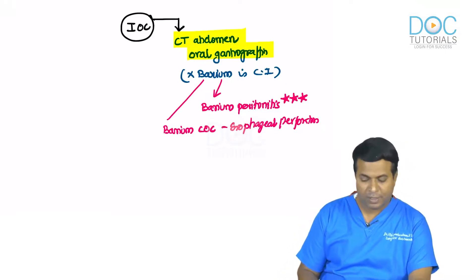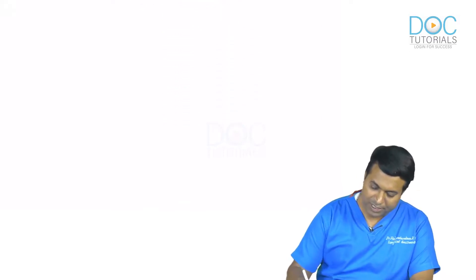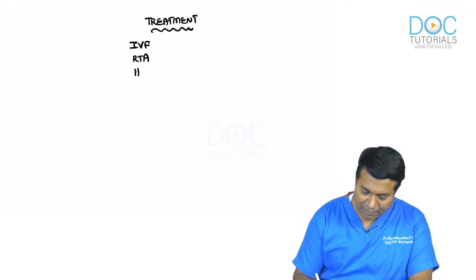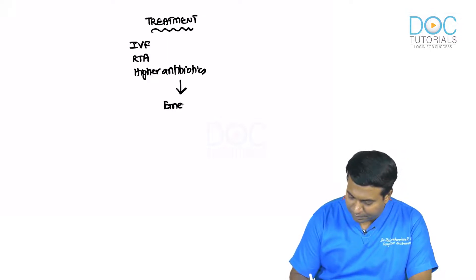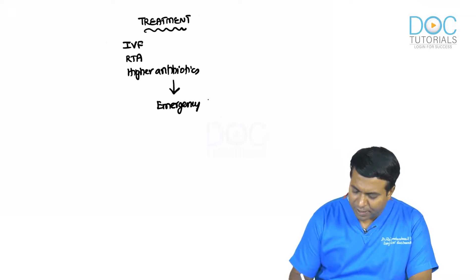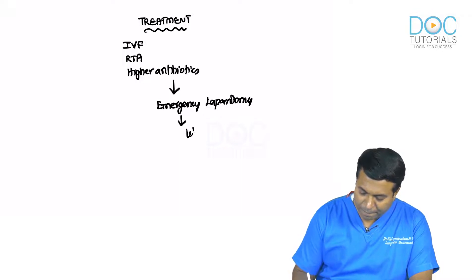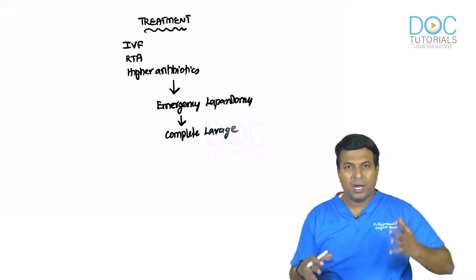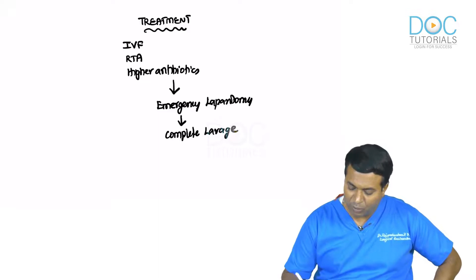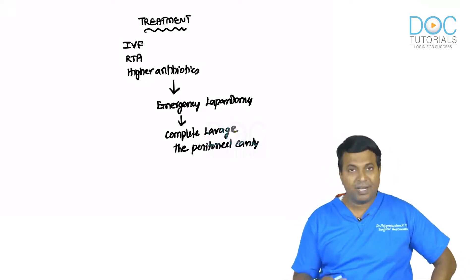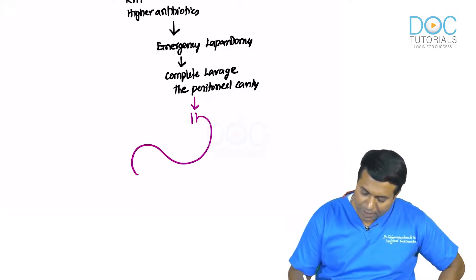Barium is the contrast of choice for esophageal perforation because it is relatively inert in the chest, but in the peritoneum it causes barium peritonitis — a serious medical-legal issue. CT abdomen with oral gastrografin is 100% sensitive. Once confirmed, start Ryle's tube, IV fluids, higher antibiotics, and immediately shift for emergency laparotomy.